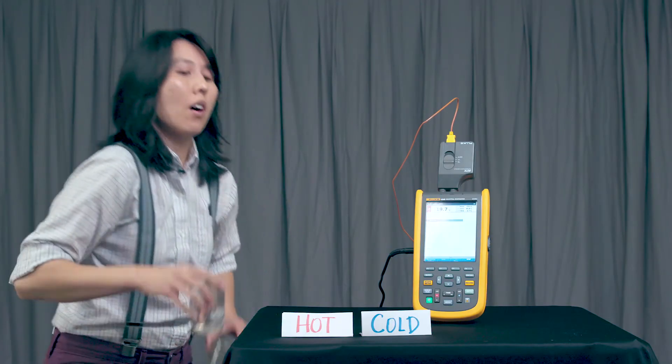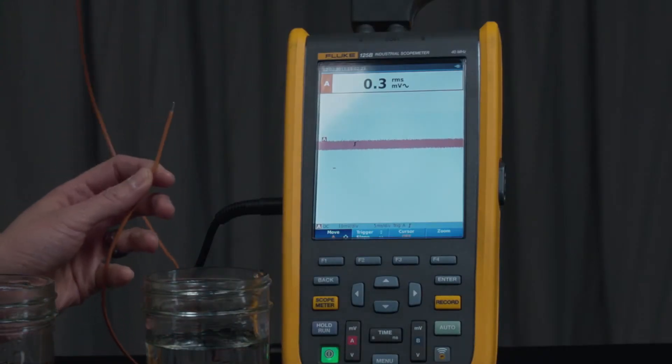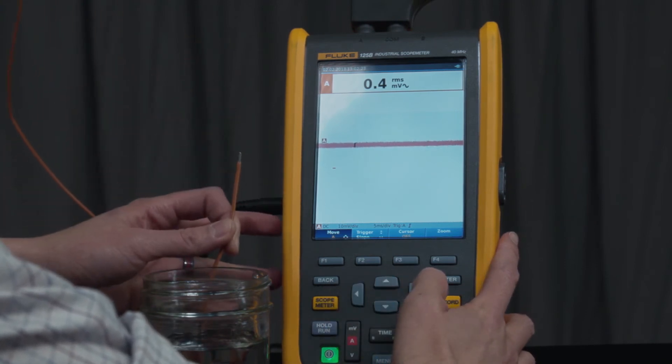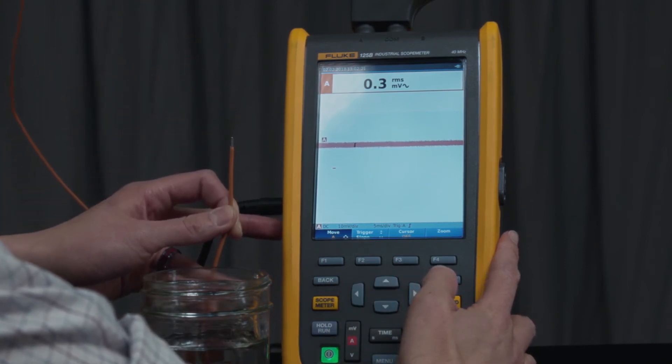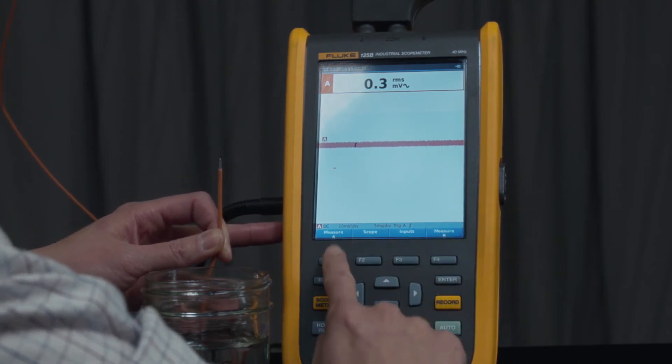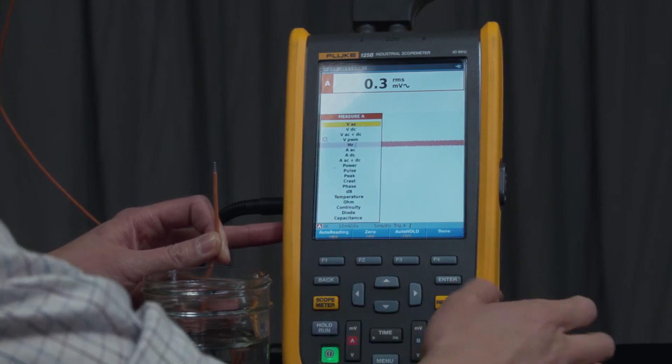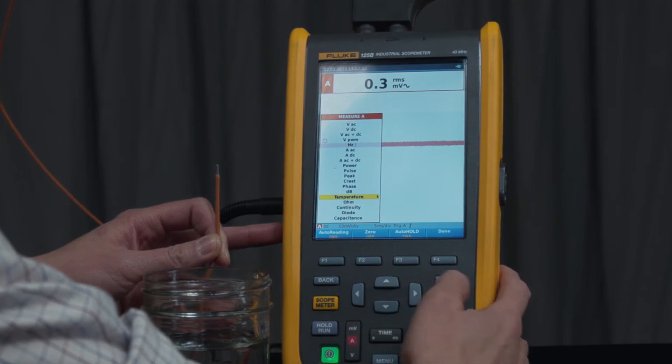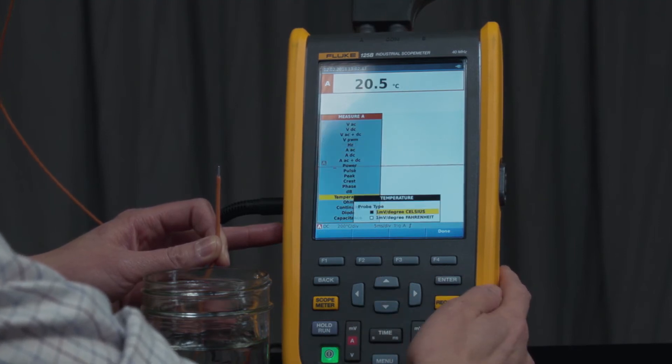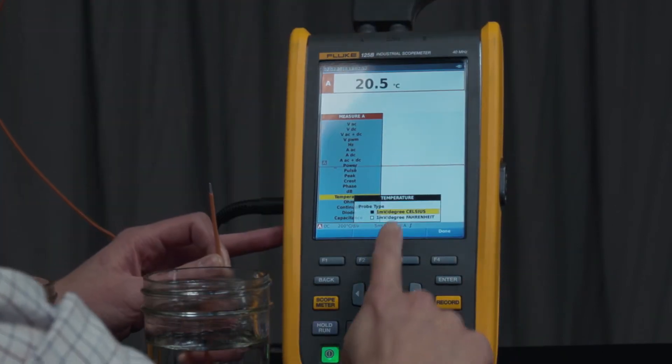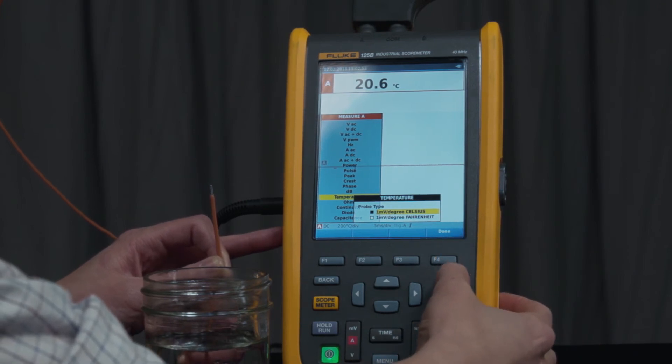For this demonstration, we'll have hot and cold water. First thing you'll want to do when you're taking the temperature measurement is make sure you have temperature selected for your channel. So right now, we have the temperature module connected to channel A. So press scope meter, F1 for choosing your measurement type for channel A, and then scroll to temperature. Once you have that highlighted, press enter. Make sure that it is set on Celsius. And we have Celsius here as well. Enter.